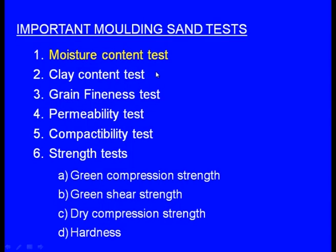First, let us see the moisture content test — how to determine the moisture content in a molding sand. We have seen that the molding sand should contain moisture from 2 to 5 percent. If the moisture is below 2 percent, there may not be enough binding. If the moisture content is more than 5 percent, excessive steam and hot gases will be produced, leading to blow holes and pin holes on the surface of the casting. So the moisture content should be optimum.